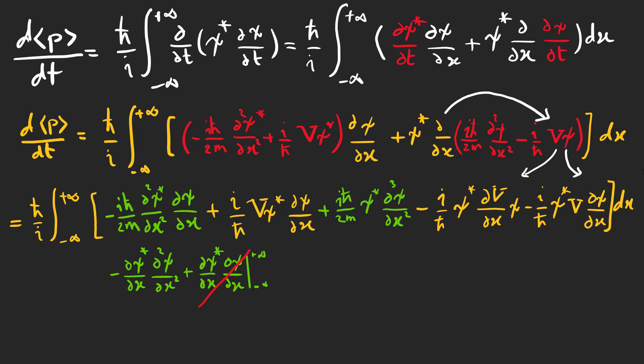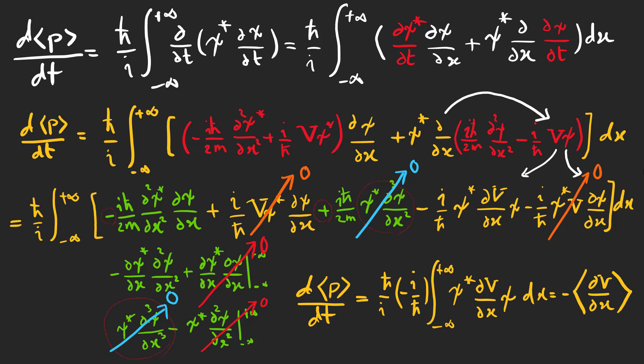After two integrations by parts, the green integrals cancel each other. Also these two integrals cancel out. And finally, we have this expression.